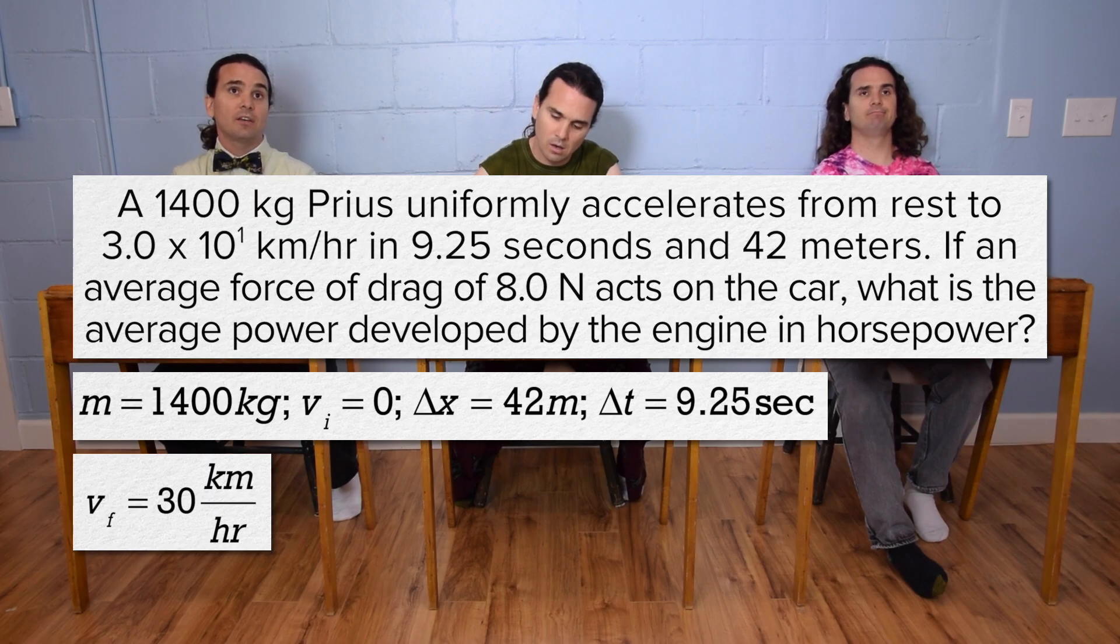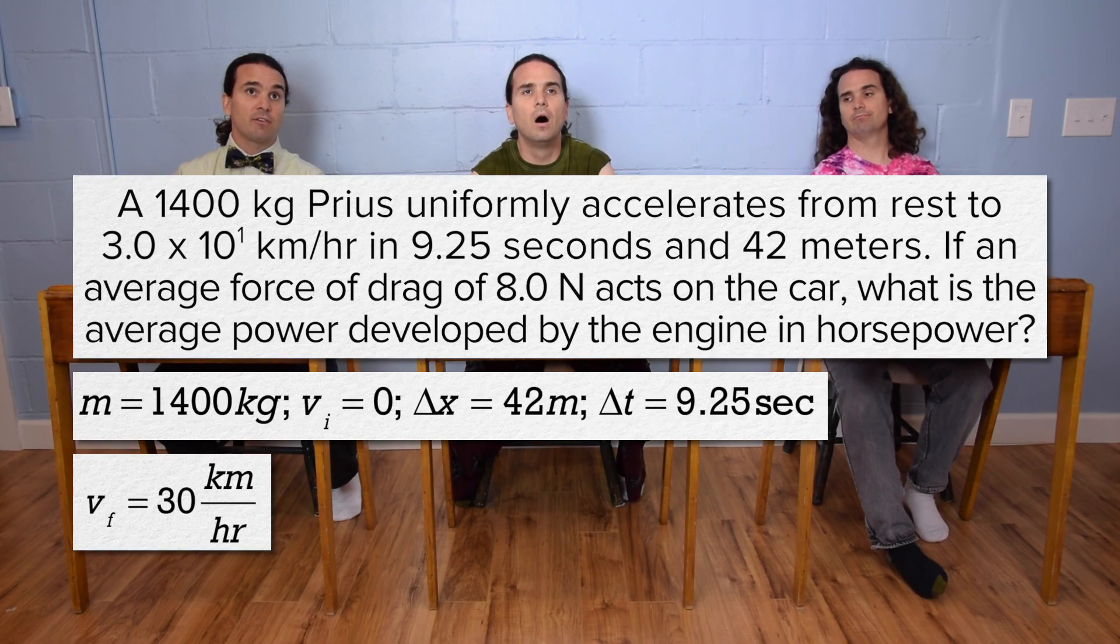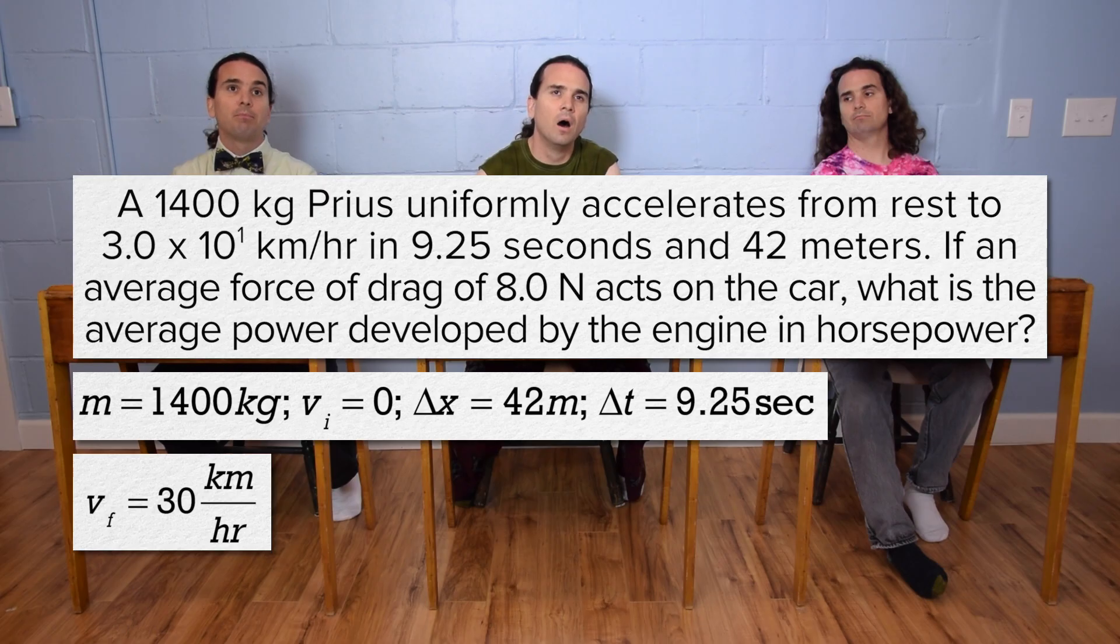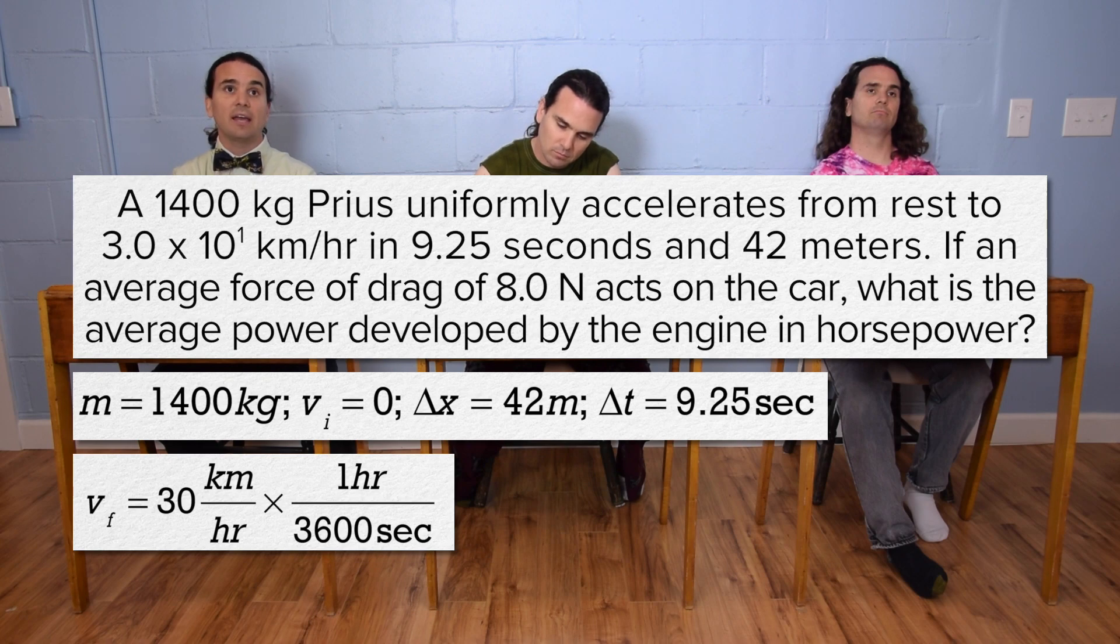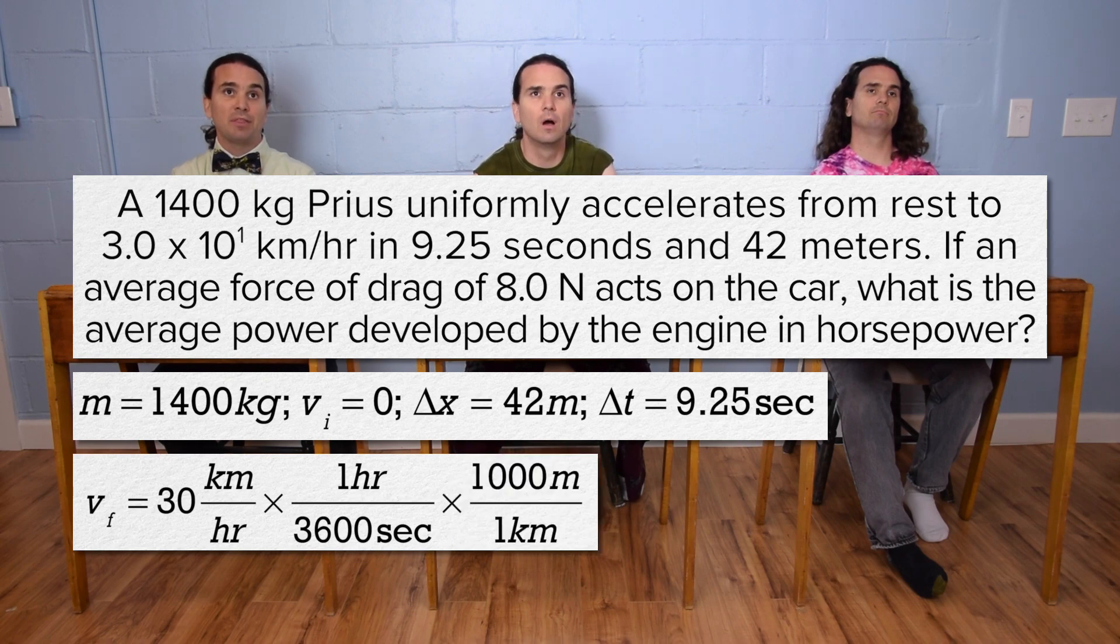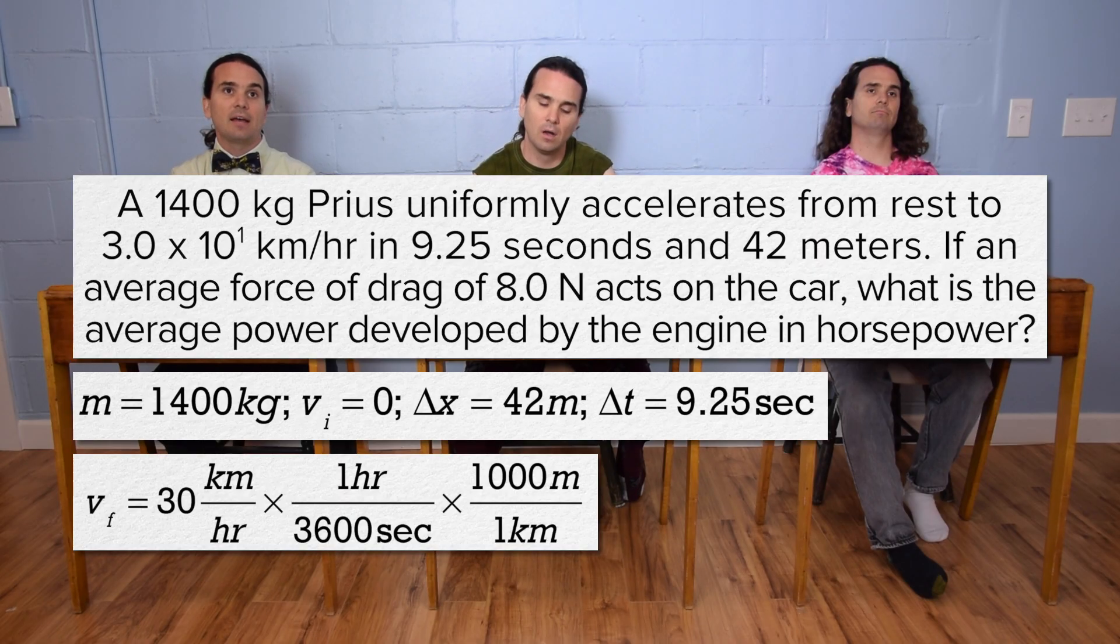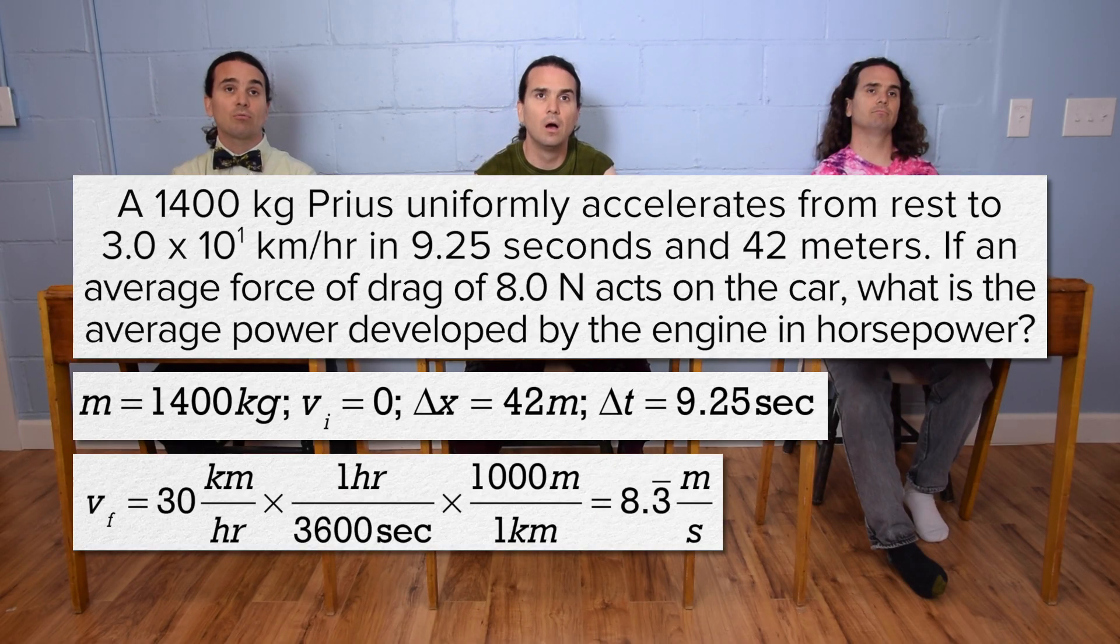We know we need the velocity final in meters per second, so let's convert that now. Multiply 30 kilometers per hour by 1 hour over 3,600 seconds and multiply by 1,000 meters over 1 kilometer to get 8.3 repeating meters per second.